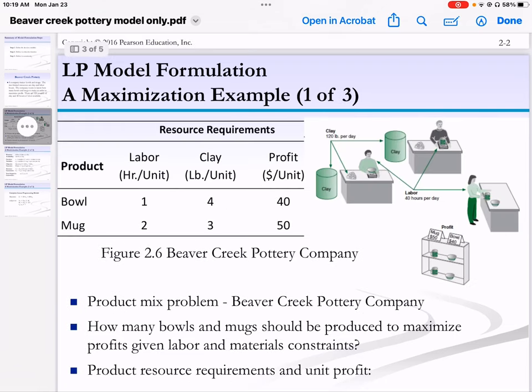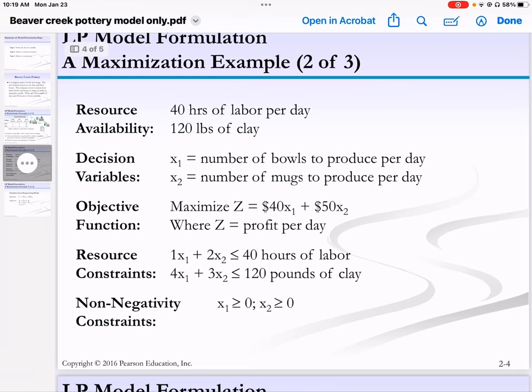We saw in our previous table that a bowl makes $40, a mug makes $50. So our objective is to maximize Z equals $40 times each bowl plus $50 times each mug, which is how much profit will be.